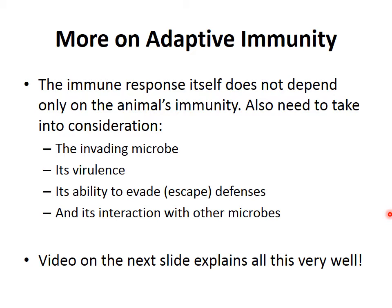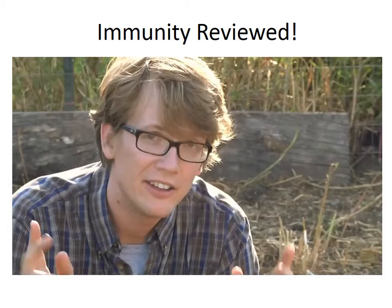The immune response doesn't depend just on the animal's immunity — we must also consider the invading microbe: its virulence, its ability to evade or escape defenses, and its interaction with other microbes. All these factors affect how well the immune system works against a given pathogen. Now we'll watch a Crash Course video that explains basic immunity really well and will summarize everything.